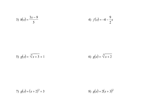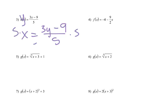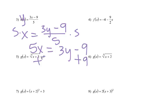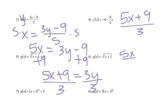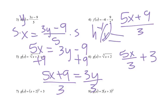Number 3, same process. Swap the x and the y, times both sides by 5: 5x equals 3y minus 9. Add 9: 5x plus 9 equals 3y, then divide everything by 3. We can leave it as (5x plus 9) over 3, or split it to 5x over 3 plus 3. Either one works, and we put our inverse notation there.